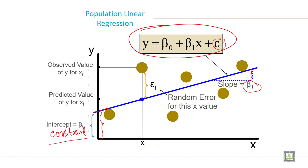This distance, the distance from here to here, is called the slope. And e is the random error of the x value, shown here from here to here. This is called e.